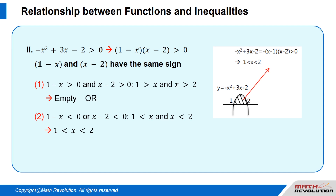1 is greater than x and x is greater than 2 is empty because there is no number less than 1 that is greater than 2. Therefore, the range of x becomes 1 is greater than x which is greater than 2 — that is, x is between 1 and 2 — which means 'between', as shown by the figure above.